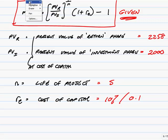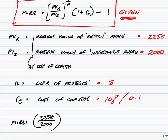And so now, it's simply a case of putting the figures in the formula and making sure that you can use your calculator. So, MIRR, present value of return phase, 2,258, divided by present value of investment phase, 2,000, to the power 1 over N, 1 over 5, times 1 plus RE, well, RE is the cost of capital 0.1, so times 1.1, and then the whole thing minus 1.